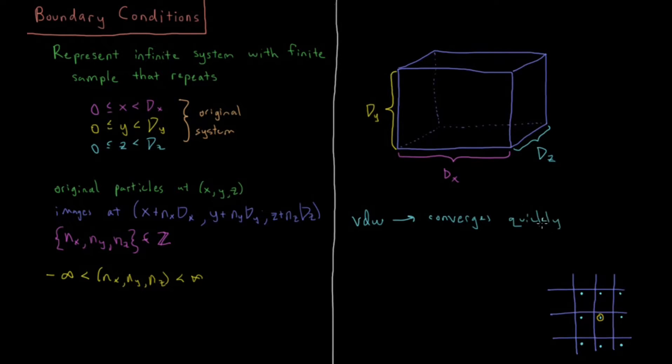Van der Waals is proportional to one over r to the sixth distance. The second image is going to interact—what is two to the sixth? That's going to be 64. So the second image interacts 64 times more weakly than the first image. And then the third image, much more than that. So it's pretty much only the nearby neighborhood that the van der Waals interacts with.